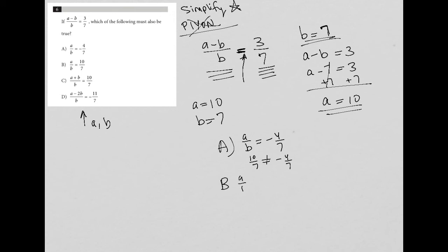For B, A over B equals 10 over 7. Well, we just said that that's true. So for us, again, A over B is 10 over 7. So that's it. The answer is choice B. There really isn't any need to look at anything else.